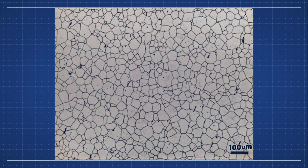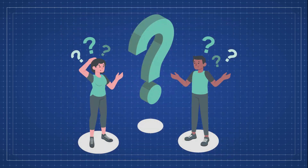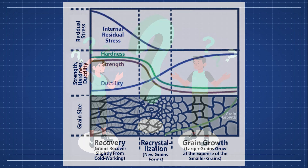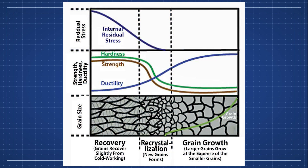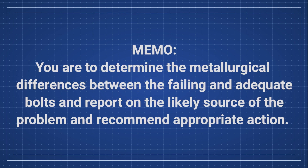After finding the grain size of each of the bolts, you will then determine how the hardness of each bolt relates to their grain size. After doing this, you will be able to make a better conclusion as to what the company should do regarding their failing bolts. In your memo, you are to determine the metallurgical differences between the failing and adequate bolts and report on the likely source of the problem and recommend an appropriate action.